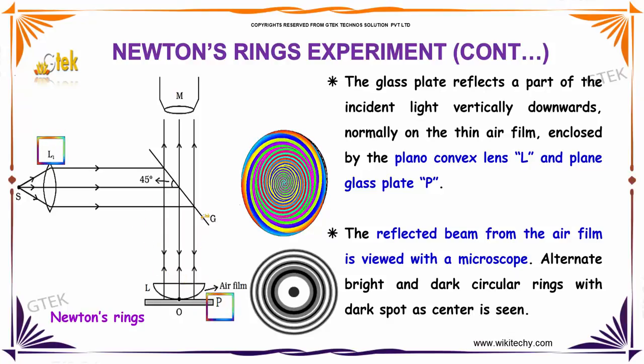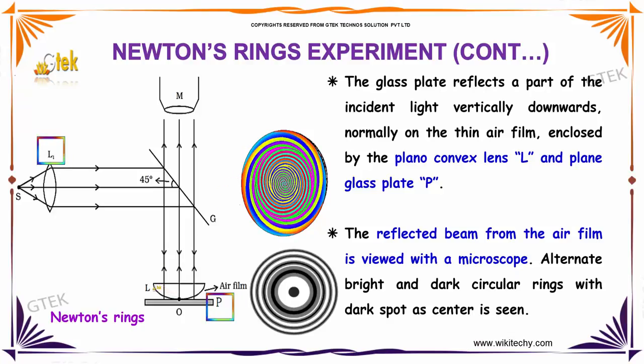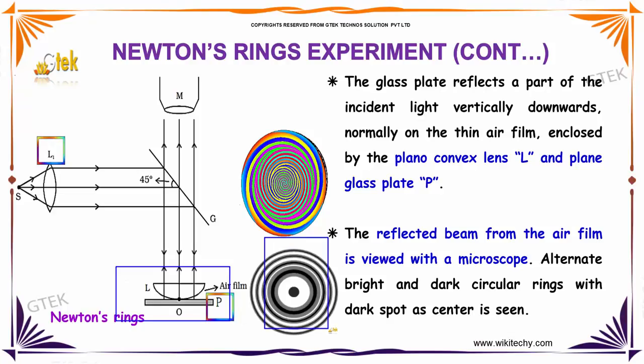The reflected beam from the air film is viewed with a microscope. Alternate bright and dark circular rings with a dark spot at the center are seen.